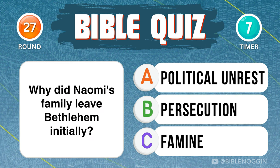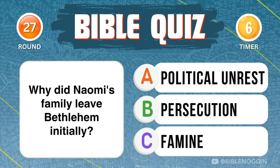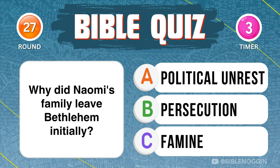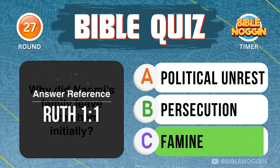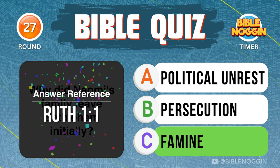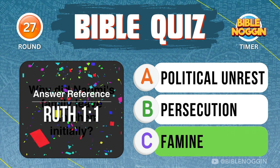Question 27: Why did Naomi's family leave Bethlehem initially? Famine — found in Ruth chapter 1, verse 1.